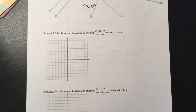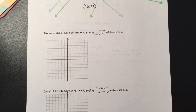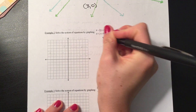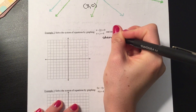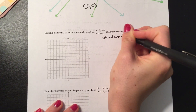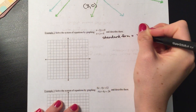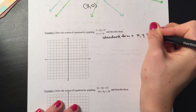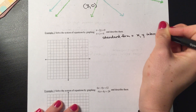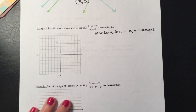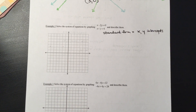For example two, we're going to solve by graphing — same with example three. Let me remind you how to graph these. These are in standard form. Whenever we're in standard form, you solve using x and y intercepts. If we're in slope-intercept form, we'd plot the point and use the slope to graph, but we're going to use the x and y intercepts because we're in standard form.